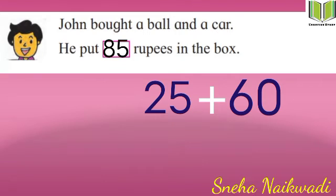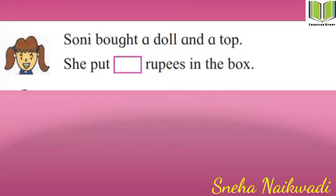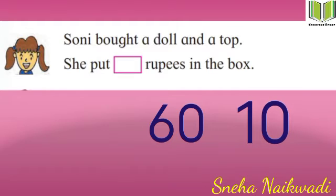Sony bought a doll and a top — she put how many rupees in the box? The price of the doll is 60 rupees and the top is 10 rupees. So 60 plus 10 makes 70 rupees. She put 70 rupees in the box.